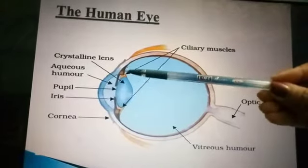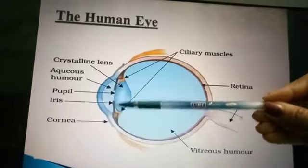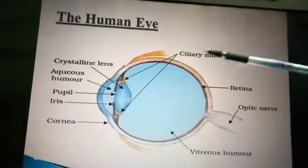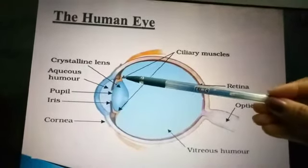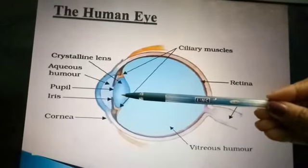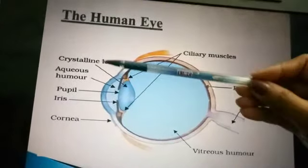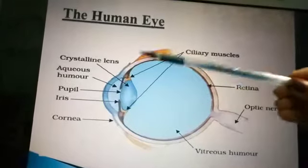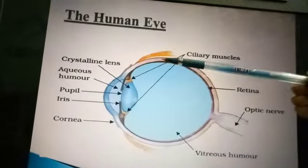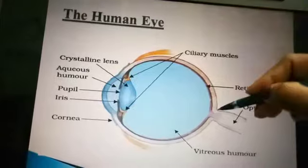Looking at the diagram, you will see the ciliary muscles on the upper side and the lower side. The function of ciliary muscles is to hold the lens in position. The crystalline lens is convex in shape with a converging function. Ciliary muscles, crystalline lens, pupil, and iris are all present in the front region. The second layer going back is the choroid.